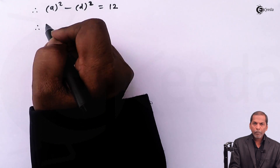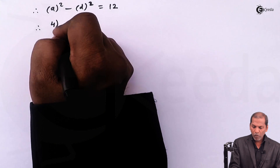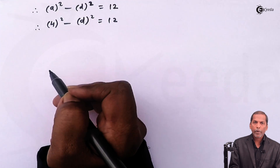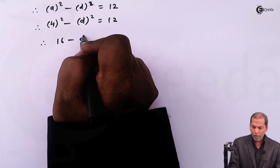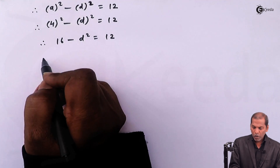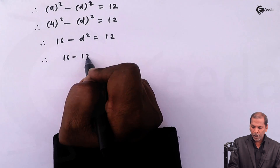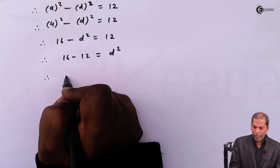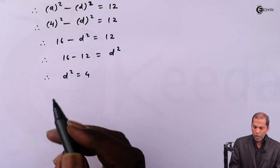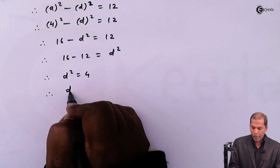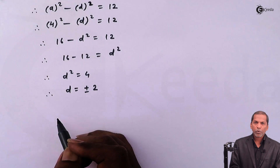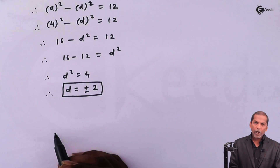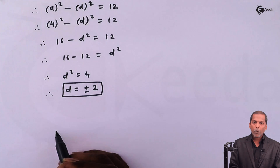Substituting the value of a into this equation, we get 4 squared minus d squared equals 12, therefore 16 minus d squared equals 12. On further simplification, 16 minus 12 equals d squared, so d squared equals 4. Taking the square root on both sides, we get d equals plus or minus 2.